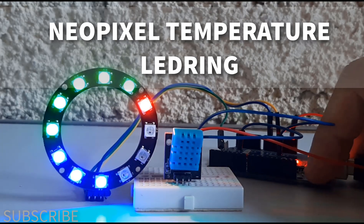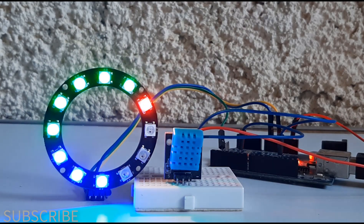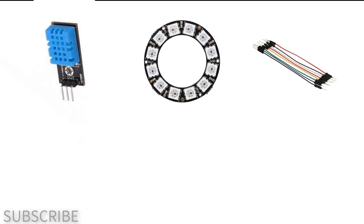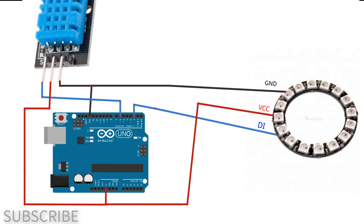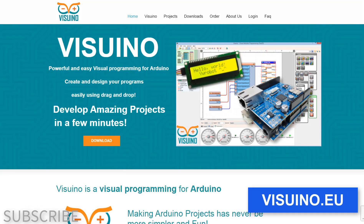In this tutorial we will learn how to display a temperature on a NeoPixel LED ring using a DHT11 sensor and Arduino. For this project you will need a DHT11 sensor, NeoPixel LED ring, jumper wires, breadboard, Arduino, and Viswino software. Wire everything according to the schematic, then go to Viswino.eu to download and install the Viswino software.